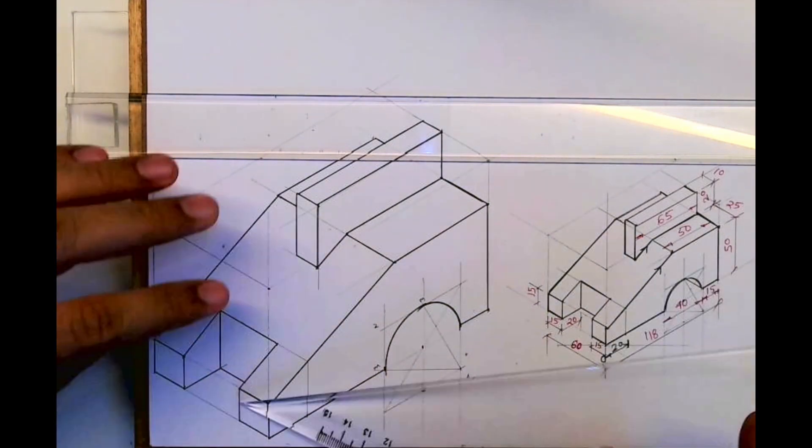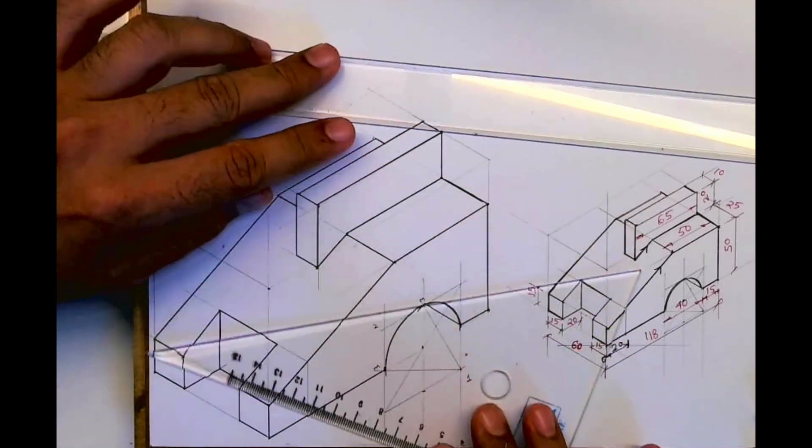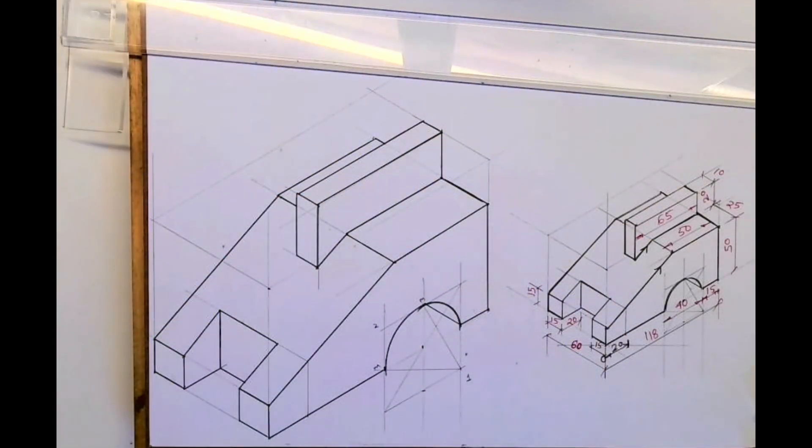And now you can draw the inside line which is inclined, which is going inside at 30 degrees. So I hope you people have understood this sum. Thank you.